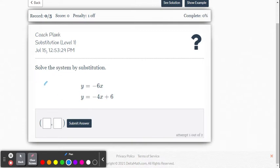So we're given the equation y equals negative 6x and y equals negative 4x plus 6. These are both linear equations. And we know the point of intersection is the solution for a system.